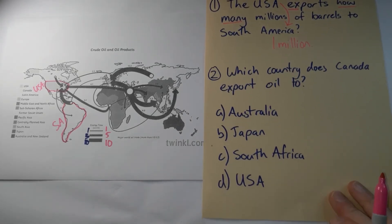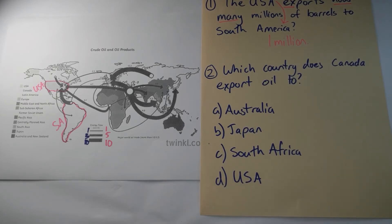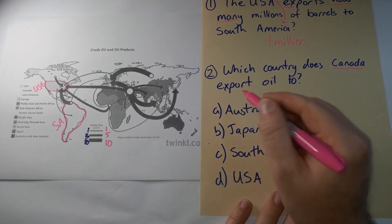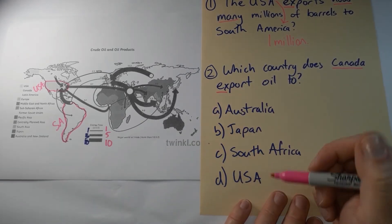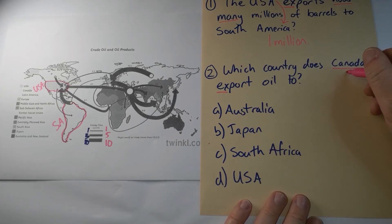Question two is multiple choice. Let's have a look at it together. Which country does Canada export oil to? Again, it's exiting Canada. We want to find an arrow which exits Canada and goes towards one of these four locations.